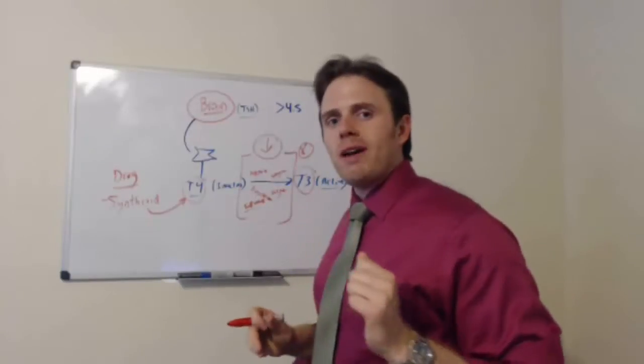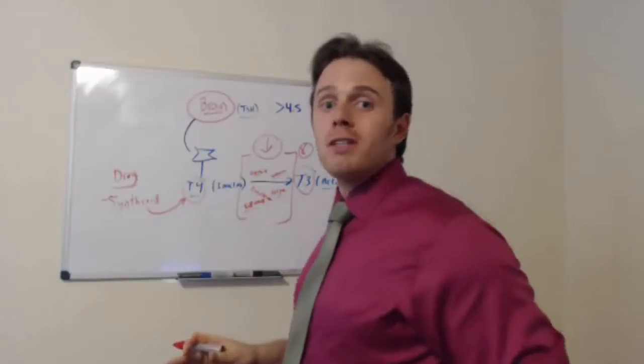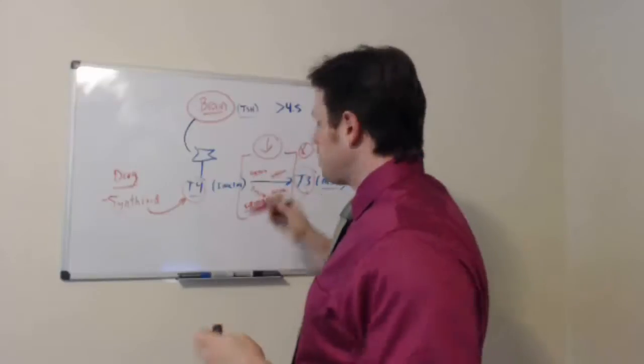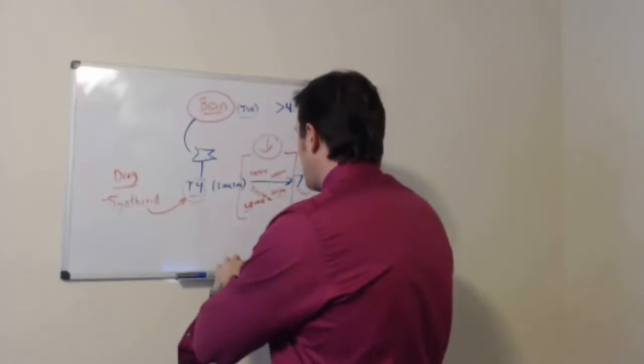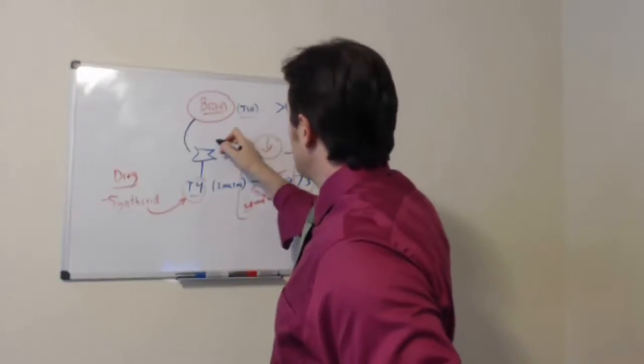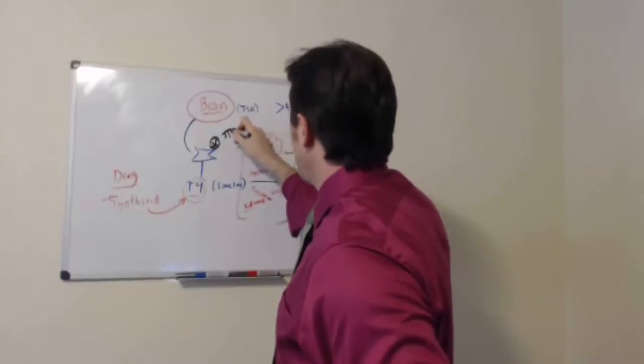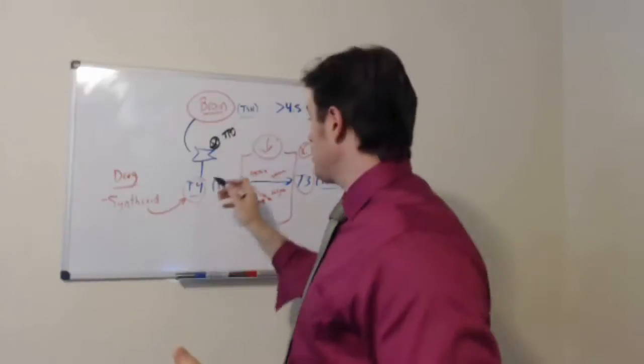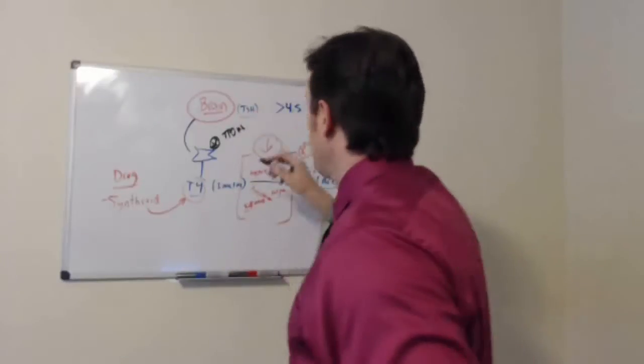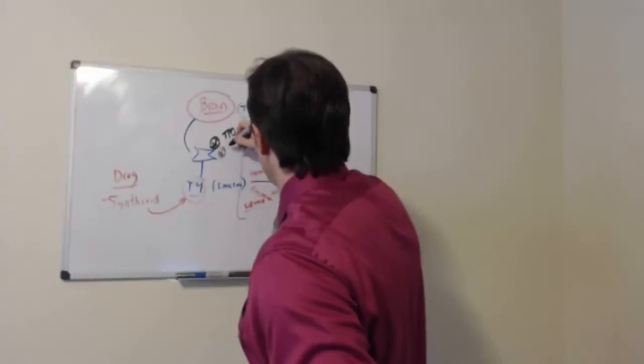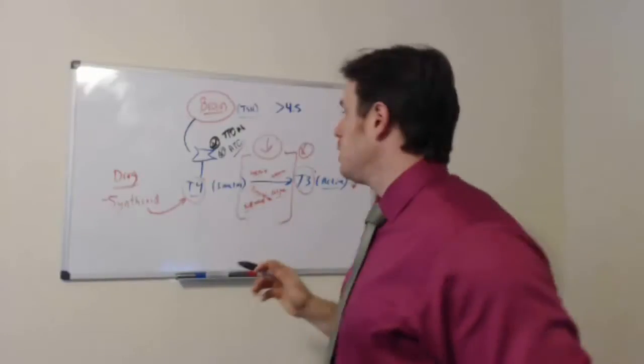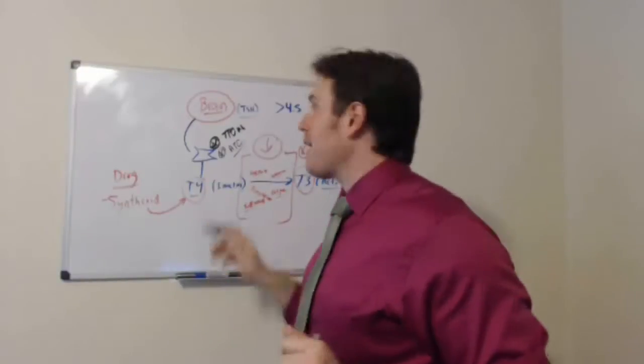And the last factor I want to touch upon that conventional medicine totally ignores is autoimmunity. So essentially, autoimmunity is we have the immune system coming in and actually attacking the thyroid gland. So we make specific antibodies that come over here and start attacking it. We have TPO, which is a normal enzyme that makes T4. We have an antibody right here that comes in and attacks the thyroid. We even have anti-thyroglobulin that comes in and attacks the thyroid.